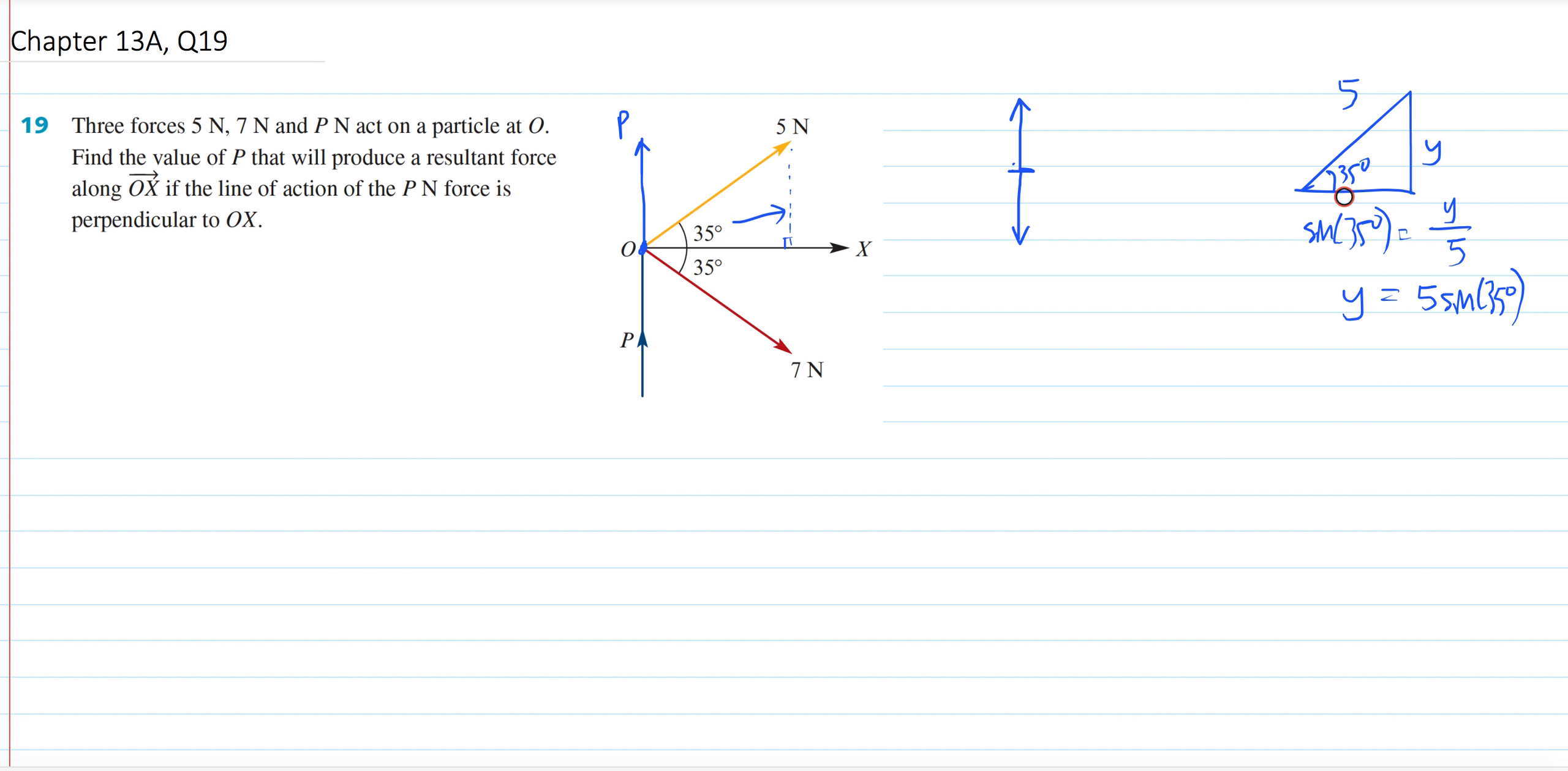If you want to do horizontal, then it will just be your magnitude, which is 5 multiplied by cos of the angle instead. But we know that this force right here going up would be 5 multiplied by sine 35 degrees. Now, we also have P that is also going up, so we don't know what that is, but we'll call it P.